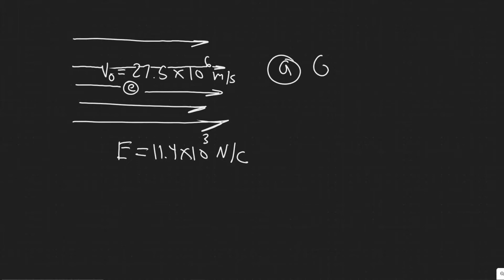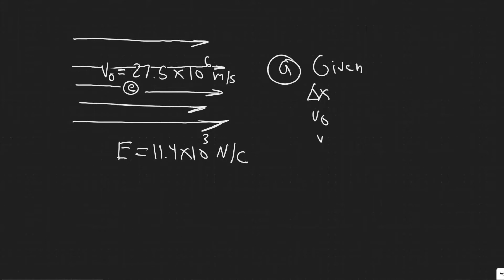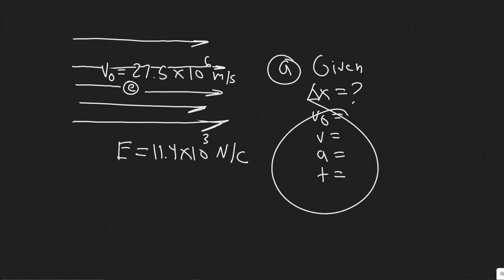The way I start kinematics problems is to write out the given variables. Assuming it's traveling on the x-axis, I'll write delta x for displacement, then initial velocity, final velocity, acceleration, and time. We're trying to find how far it travels before it stops — so starting from zero, how far does it move? That distance is delta x, and we need three other variables to solve for it.